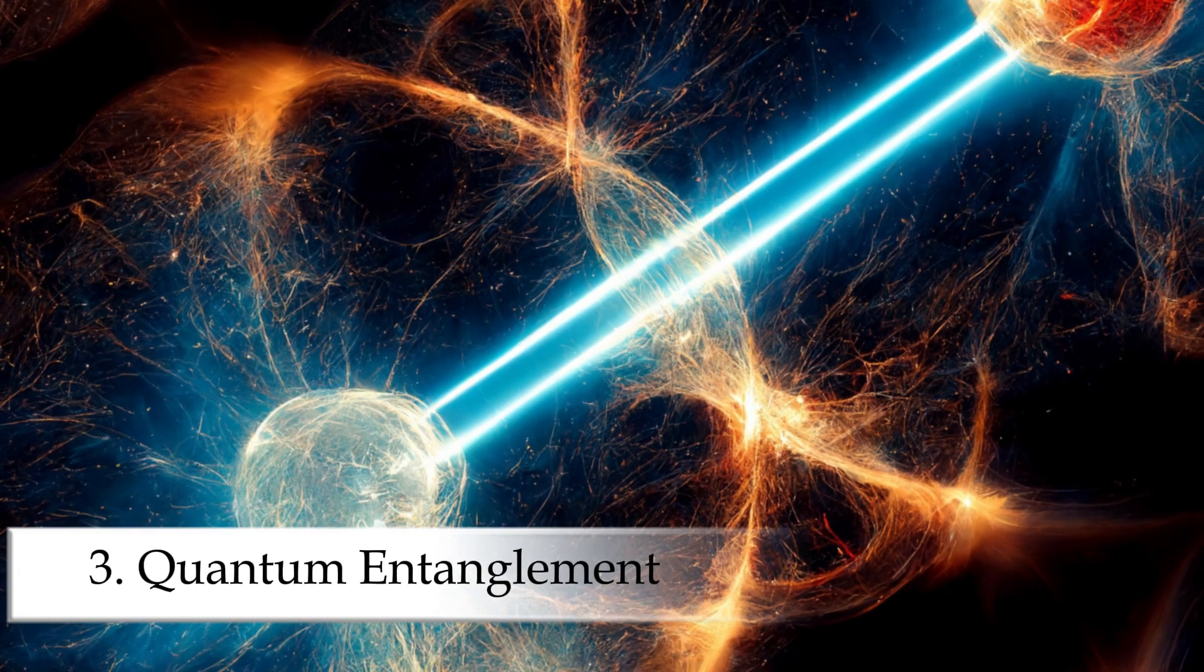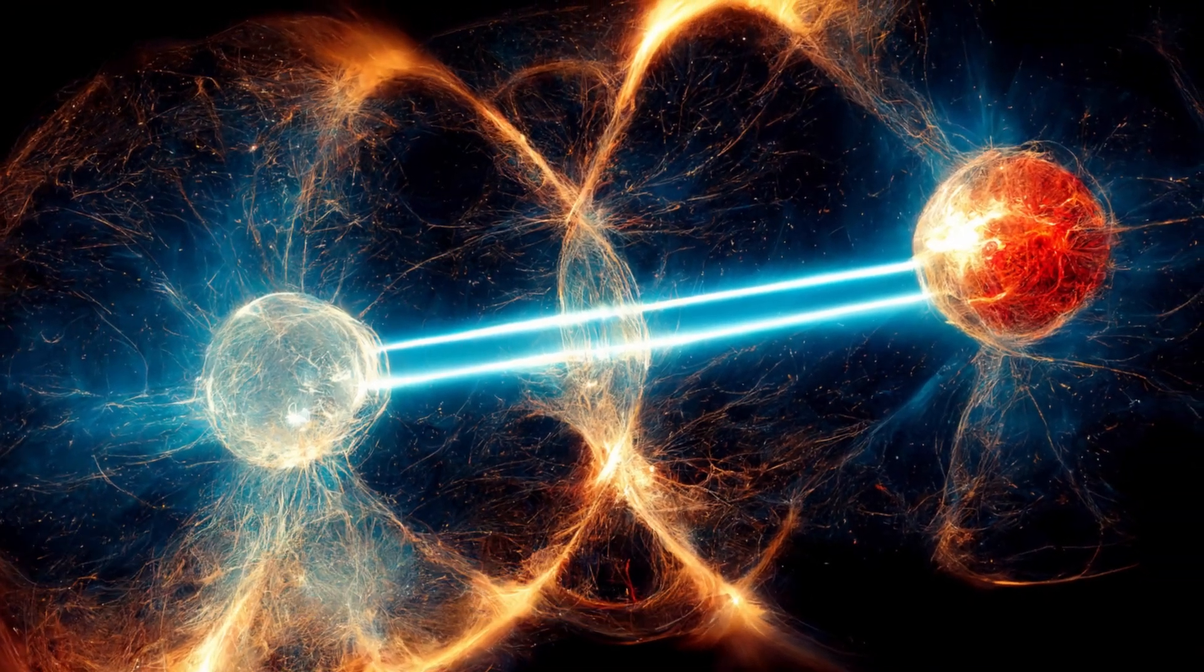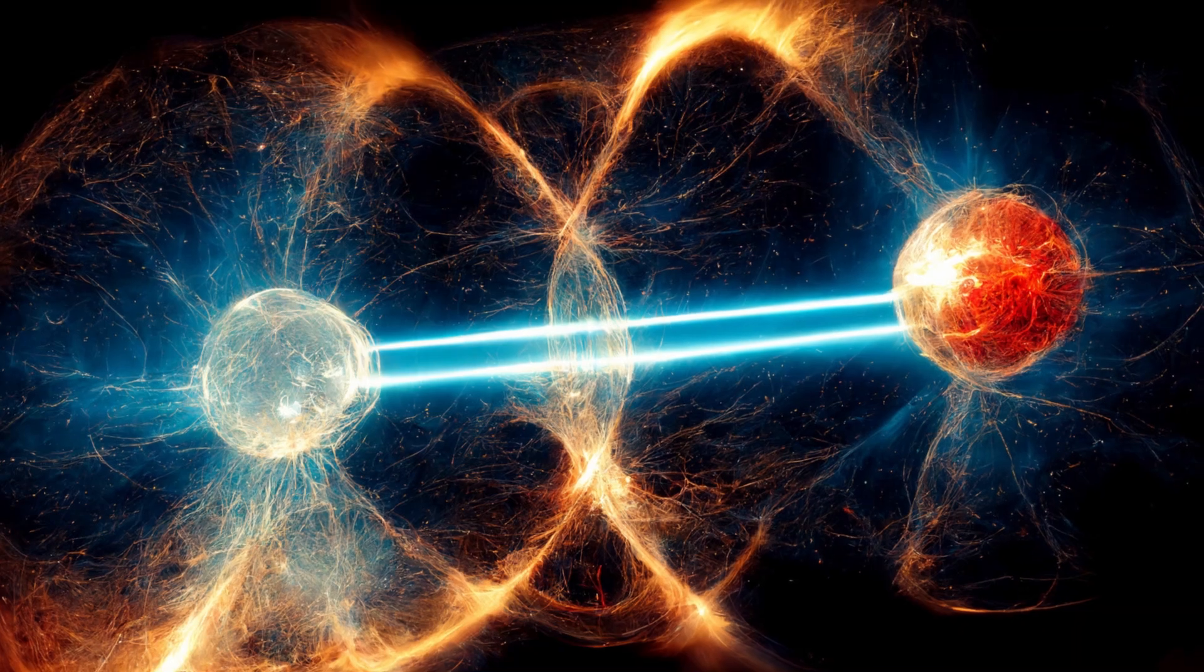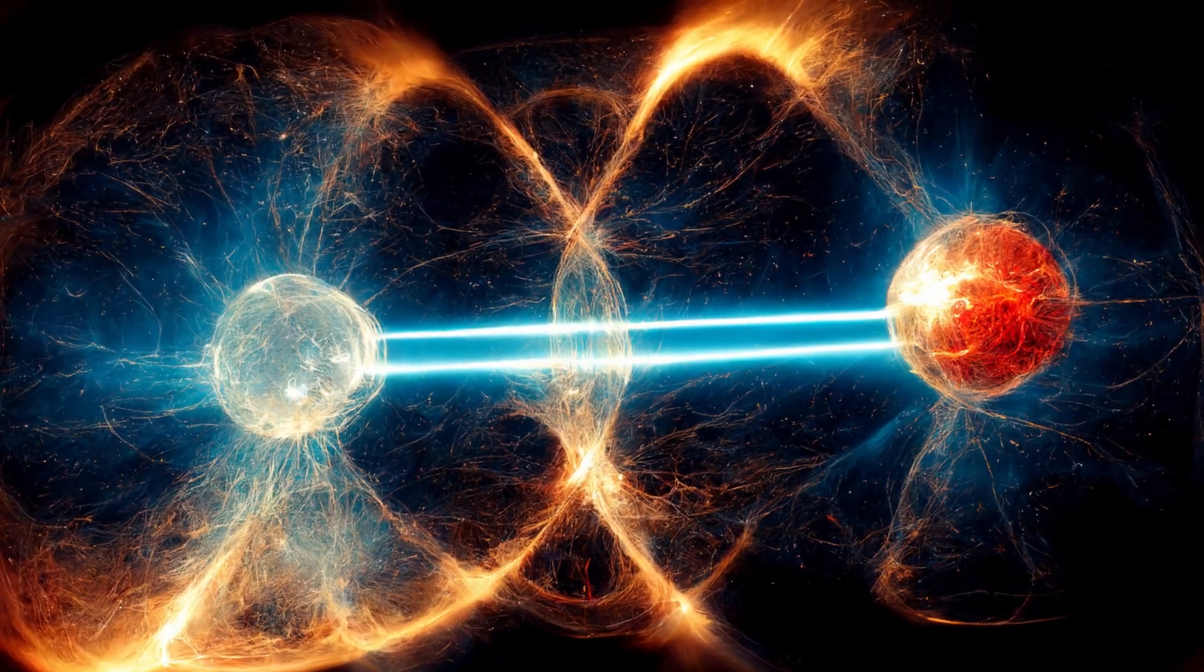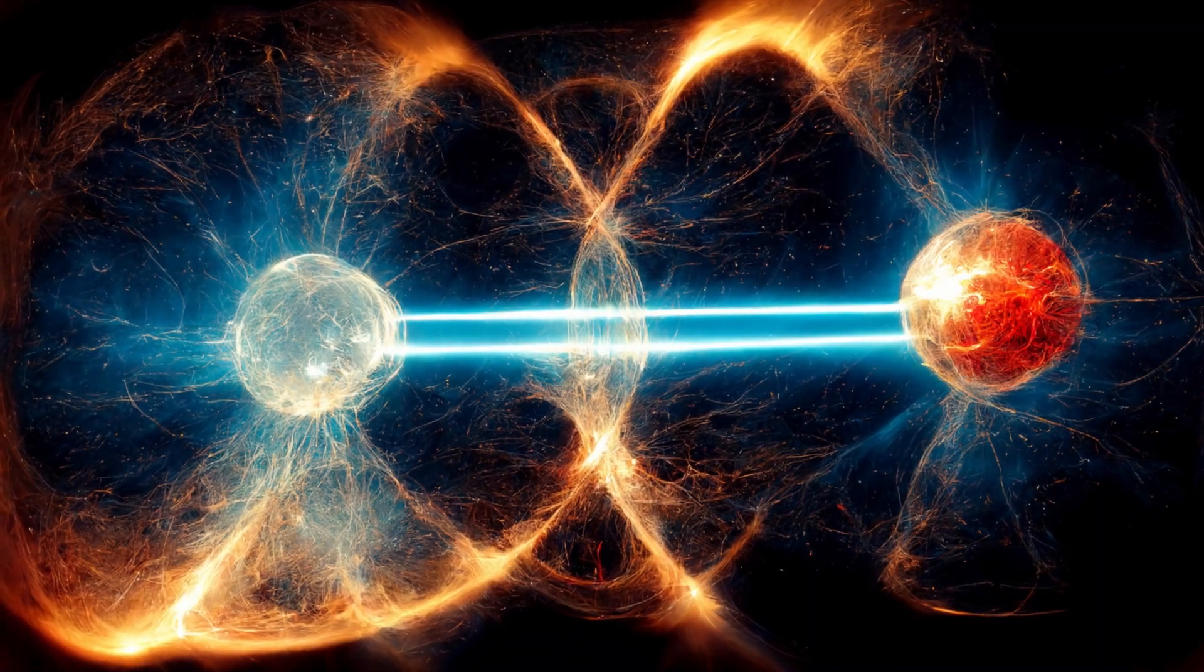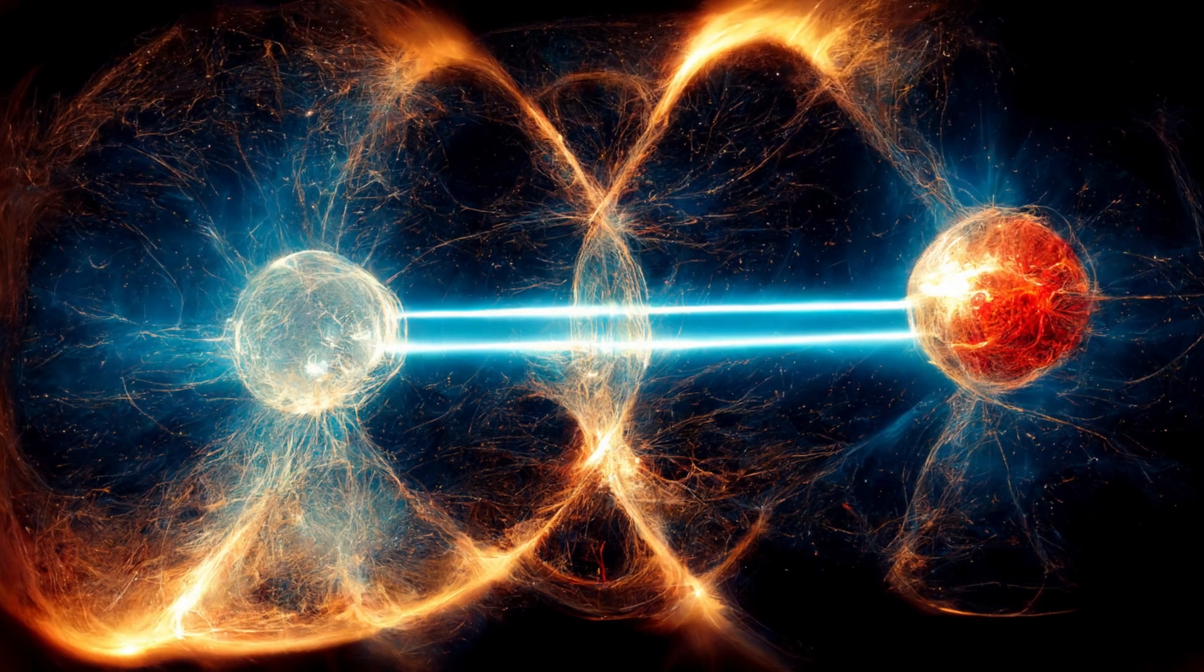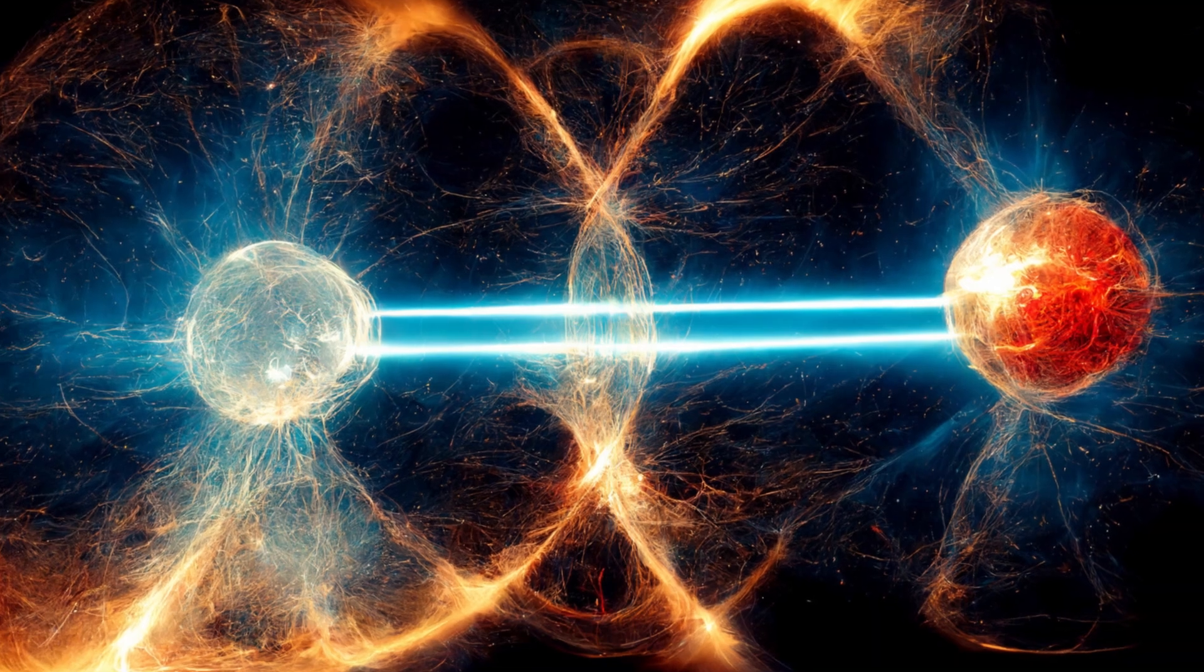Number three, quantum entanglement. Einstein called it spooky action at a distance. When two particles are entangled, their properties are linked, even if you separate them by light years. Measure one, and you instantly know the other.